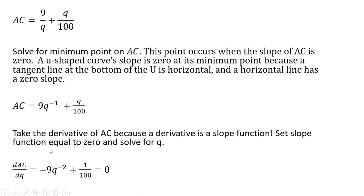Taking the derivative: bring down the minus one in front of the nine, giving us minus nine, then subtract one from the exponent. Q divided by 100 becomes just one over 100. This derivative is a slope, so now we set the derivative equal to zero and solve for Q.